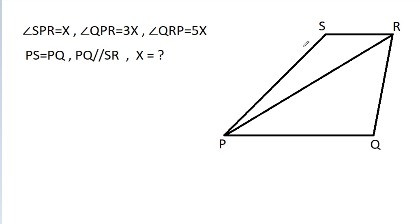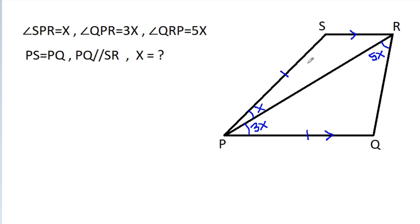In this video, we have given that angle SPR is x, angle QPR is 3x, angle QRP is 5x, and PS is equal to PQ, and PQ is parallel to SR. Then we have to find x.